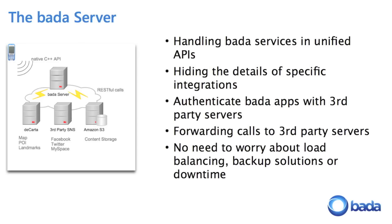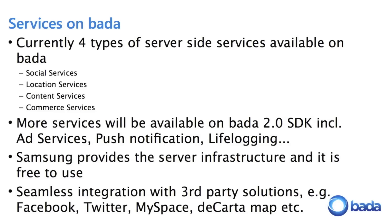For the content side, the Samsung server talks to the Amazon S3 server, retrieving content meta information from Amazon. This is the big picture of how the Samsung server works with other servers. The service is also a nice way to integrate third-party solutions like Facebook, Twitter, and MySpace. For maps, we're currently using the Decata map as the default service provider. These are all integrated into the Samsung server and provide a native C++ API. Regarding whether the service can be used on Samsung Android phones — currently it's not, though technically it's possible since the server side is a REST API. Currently it's just open for Bada.